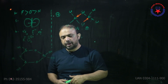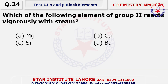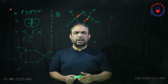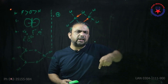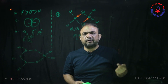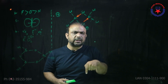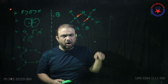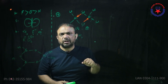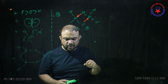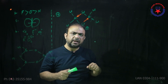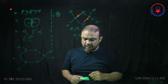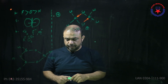Question number 24: Which of the following elements of group 2 reacts vigorously with steam? As we go down the group, the rate of reaction increases. So obviously the choice is barium, which is D, and hydrogen gas is evolved.